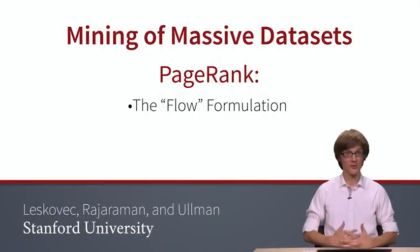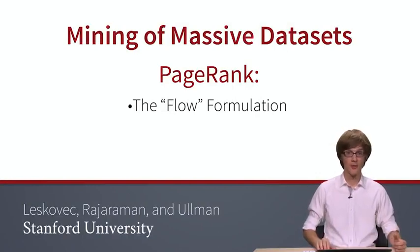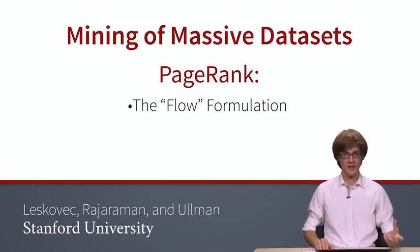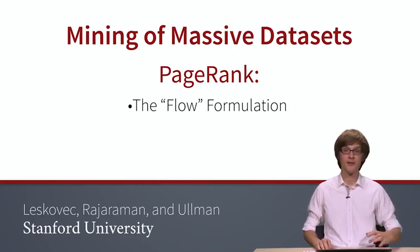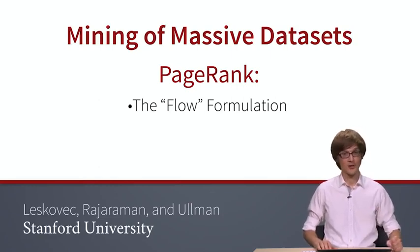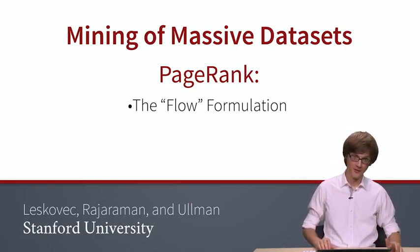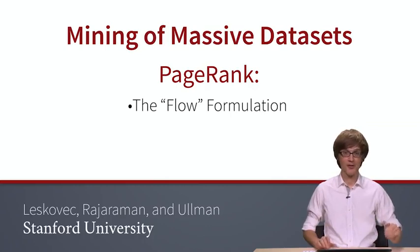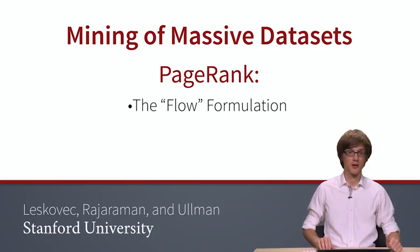The first approach to computing importances of web pages in a big web graph is called PageRank. We will come up with the first mathematical formulation of PageRank. We will first talk about it intuitively, then mathematically formalize it, then talk about how to actually compute the importance scores. Our initial formulation will turn out to be broken, so we will later fix it. For now, we will come up with the initial formulation, called the flow formulation for the PageRank algorithm.